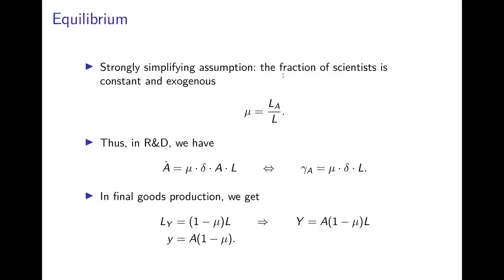We make a strongly simplifying assumption compared to the full Romer model: the fraction of scientists is constant and exogenously given. We denote this by mu — the number of researchers divided by the population size. In the full Romer model, this is an endogenous variable that adjusts at equilibrium. Here we assume it is a parameter, which makes life much easier, but we will see that many of the effects of the Romer model still carry over to this simplified version.